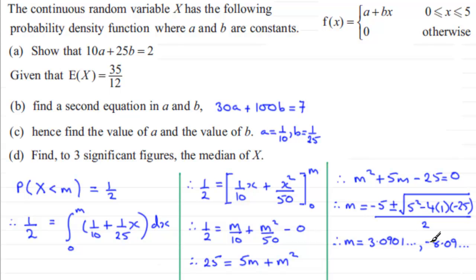So which one of these two values do we take for m? Well the question is that x has to lie between 0 and 5. So clearly it's got to be the 3.0901. So to three significant figures, we've got therefore m equals 3.09 to 3SF.